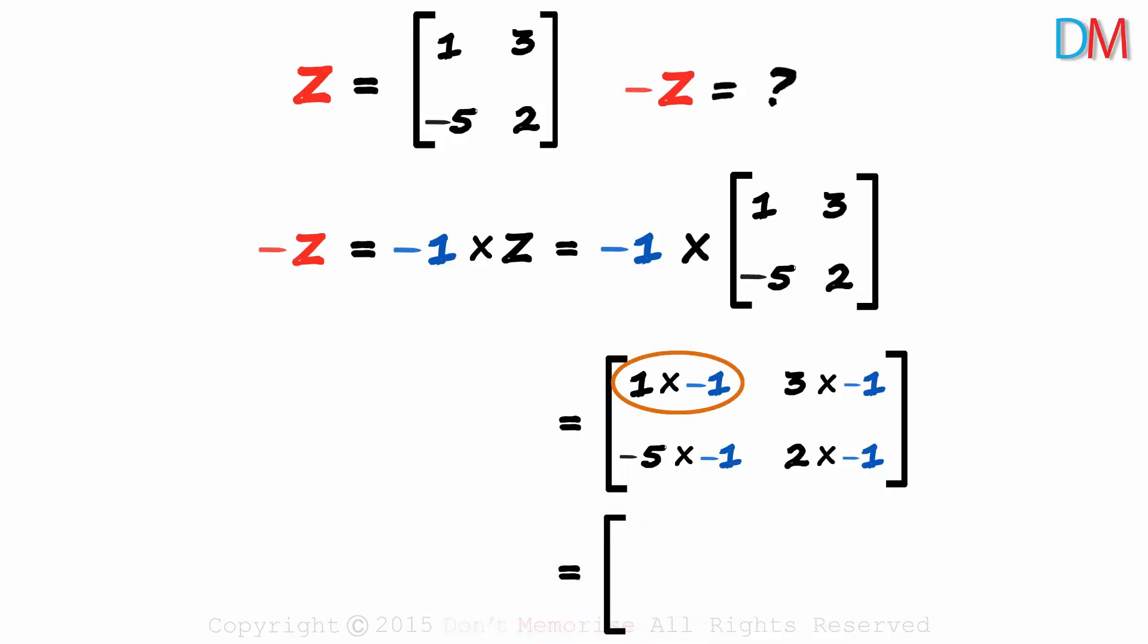1 multiplied with minus 1 is minus 1. 3 times minus 1 is minus 3. Minus 5 multiplied with minus 1 is 5, and 2 times minus 1 is minus 2. If Z is this matrix, then negative of Z will be this matrix.